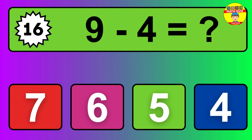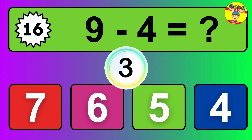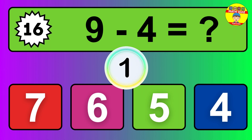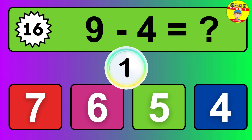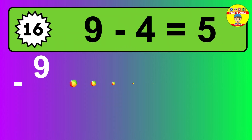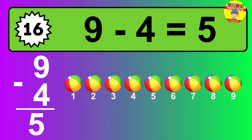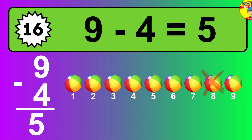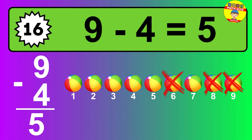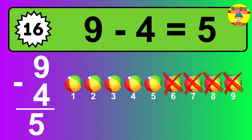Question 16. 9 minus 4 equals what? The answer is 9 minus 4 is 5. Let's count it: 1, 2, 3, 4, 5.